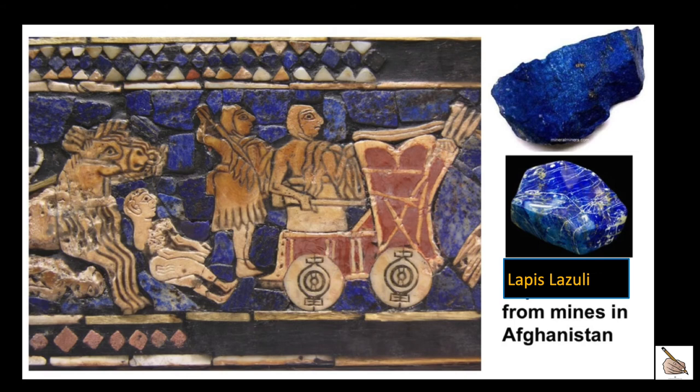Lapis lazuli is a deep blue opaque gemstone used in antiquity and continuously used throughout the generations; it remains one of the most important opaque gemstones. Lapis lazuli is chiefly composed of the mineral lazurite, with additional minerals including white calcite and sparkling specks of pyrite. In this case, they found them in Afghanistan and used them on the Standard of Ur in the background.